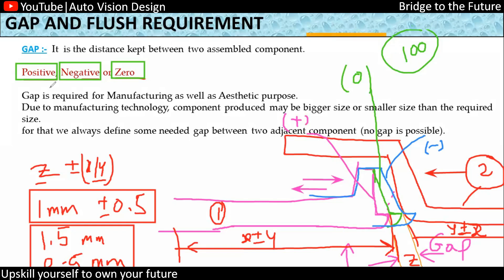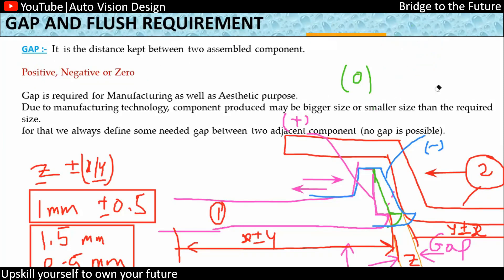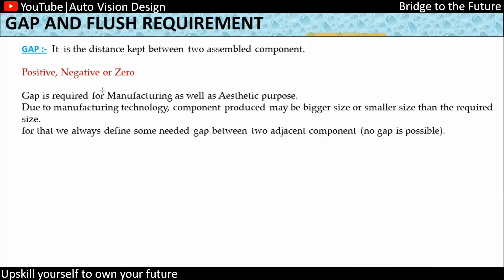This doesn't mean we cannot create a part with zero gap — we can achieve zero gap. However, due to manufacturability, there will always be tolerances added. Each and every dimension we provide will come with tolerances. So we can control a zero gap, but there will still be a tolerance associated with it.